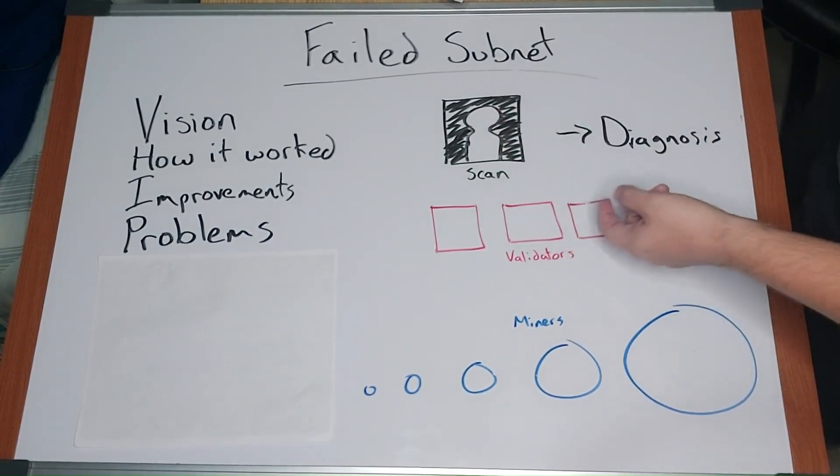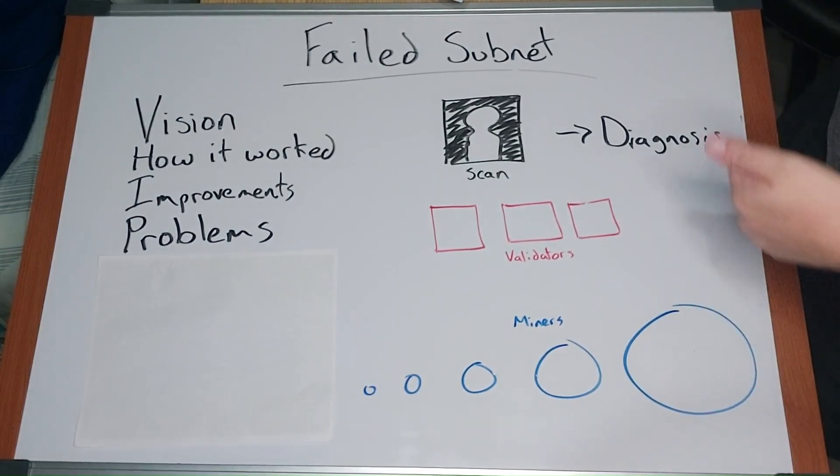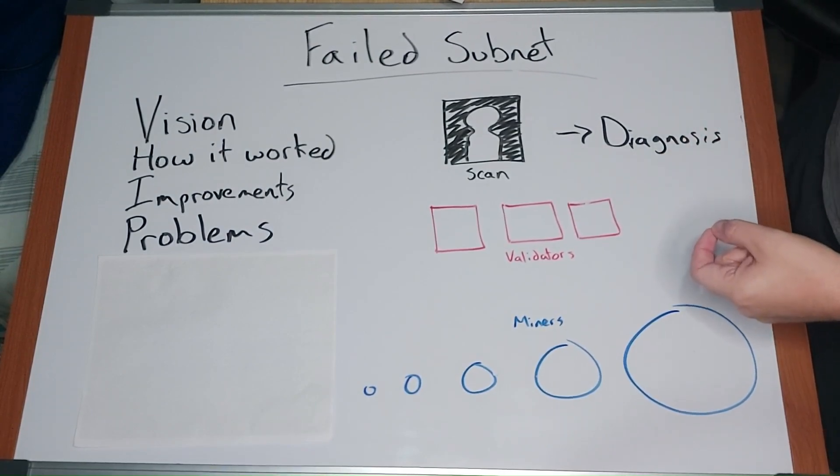In the end, validators and their stakeholders didn't believe in the subnet anymore. The subnet failed. It became the least performance subnet, and subnet 31 was replaced by a new subnet.